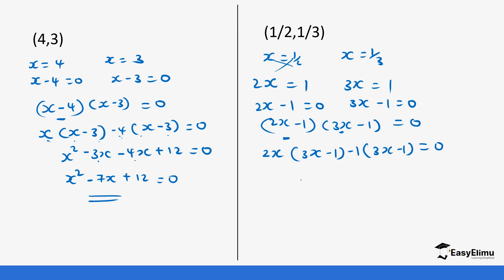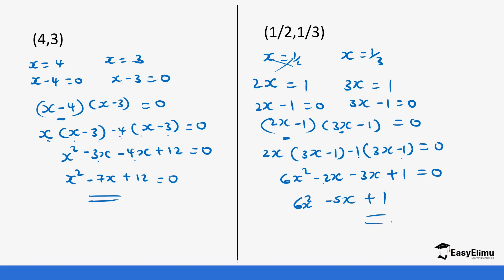This gives us 6x squared minus 2x minus 3x, then positive 1 — because minus times minus is positive. So 6x squared minus 5x plus 1, and that is our answer.